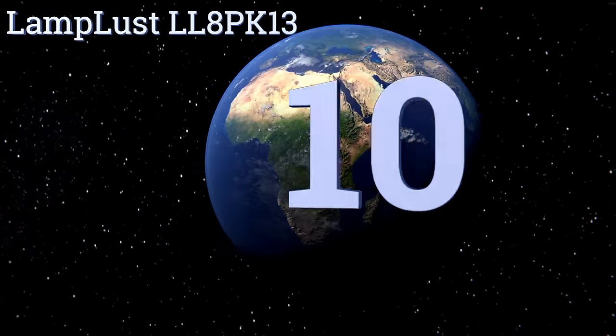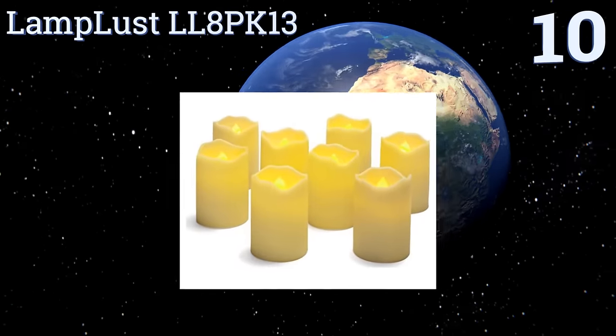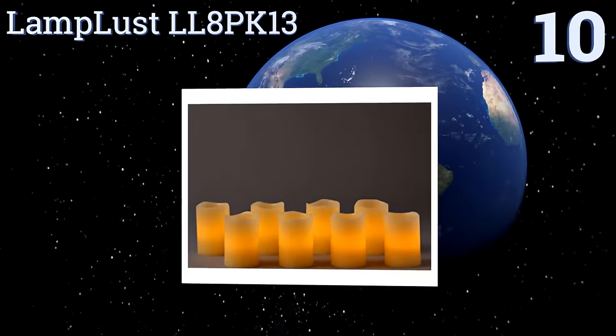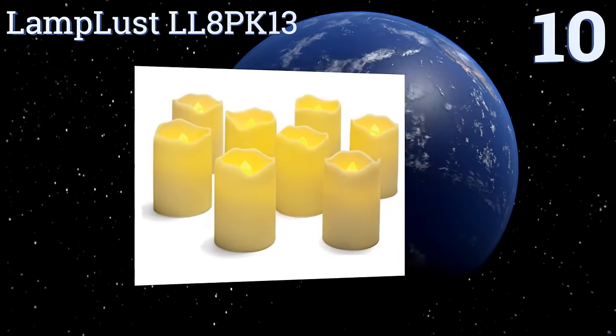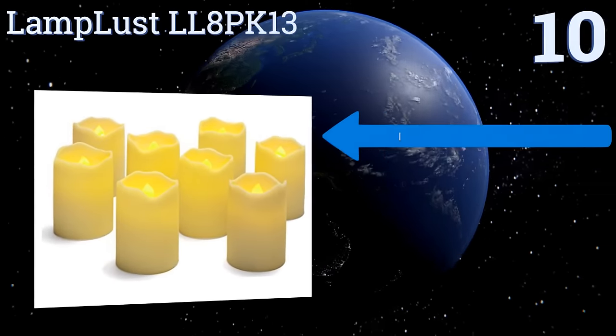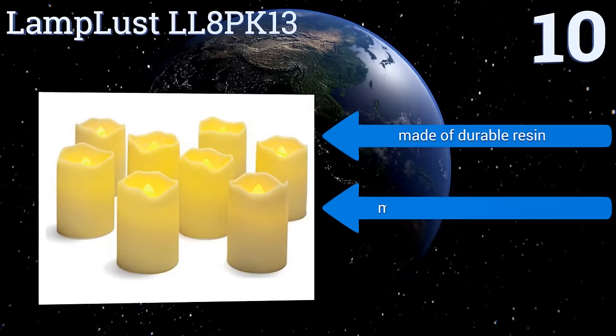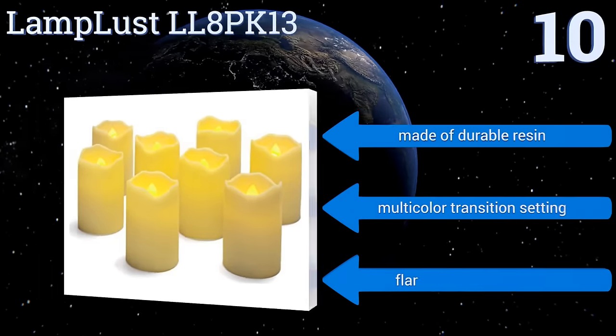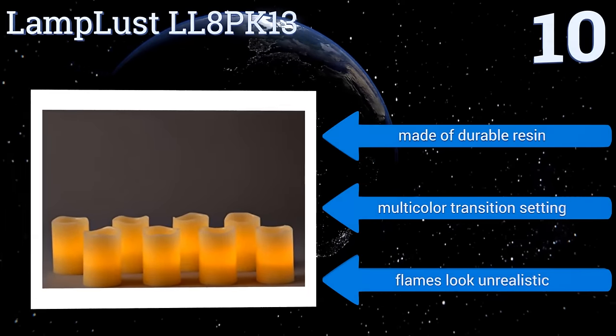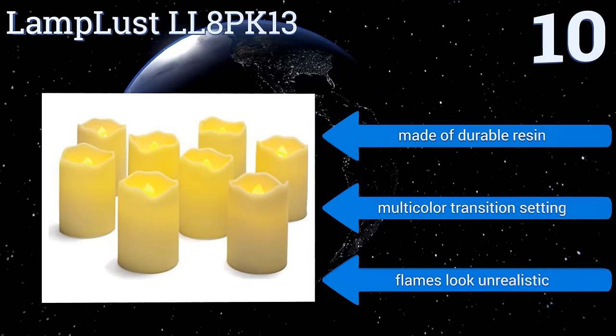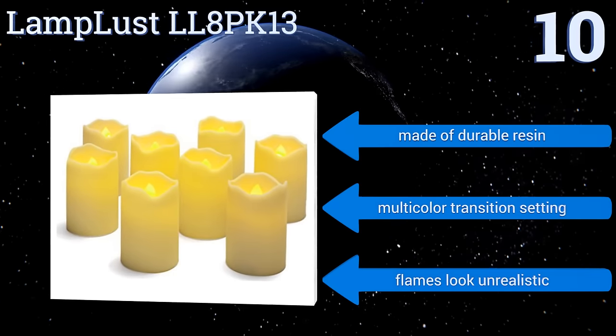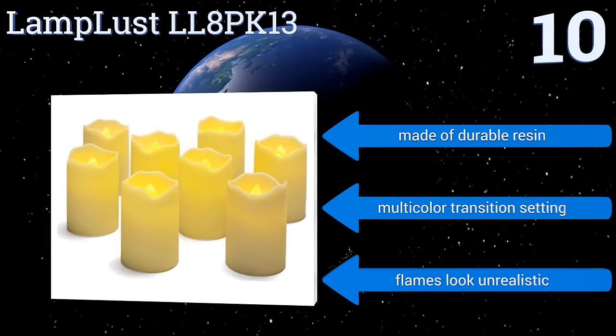Starting off our list at number 10, the Lamplast LL8PK13 is a set of 8 compact votive candles that measure just 3 inches high and 2 inches wide, so they can be positioned in tight spaces with ease. Each one provides up to 75 hours of light on a single CR2450 battery before it needs to be replaced. They're made of durable resin with a multi-colour transition setting. However, the flames look unrealistic.